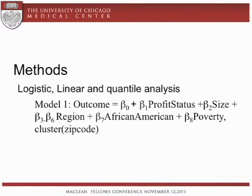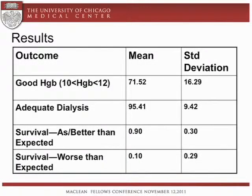Looking at the universe of dialysis facilities: 72% of patients who receive dialysis have a good hemoglobin within the 10 to 12 range. Almost 95% of patients have adequate dialysis. And 10% have worse than expected survival in dialysis facilities. This result reflects ongoing efforts to improve quality in dialysis facilities. For the analysis, it's unfortunate that we don't have great spread, but it's beneficial for the patients that most patients have good outcomes.